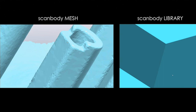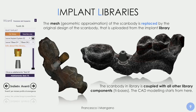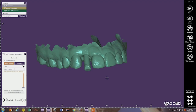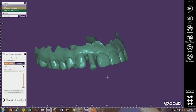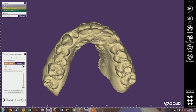The dental technician replaces the mesh of the scan body with the library file, and we obtain a hybrid file. The dental technician models the final restoration or provisional restoration on the library that is inserted into library components within a mesh of the arch. It is very important to consider this moment — when the mesh, which is a geometric approximation of reality, is replaced by the library file, the original CAD design. This file is then coupled with all the library components.